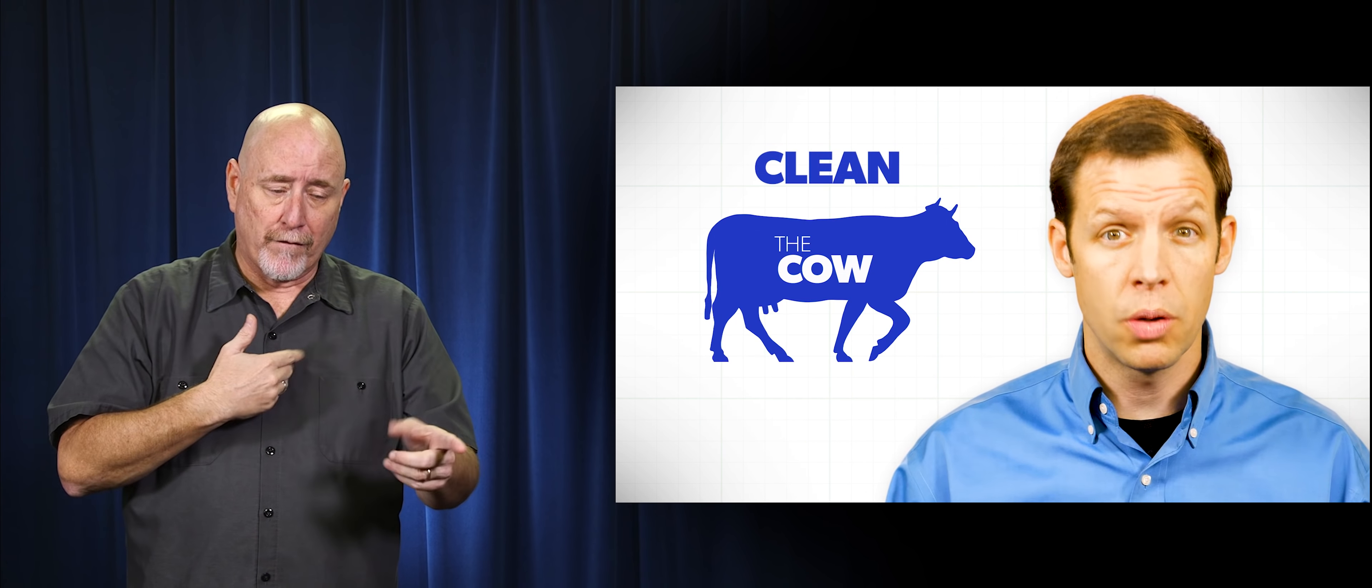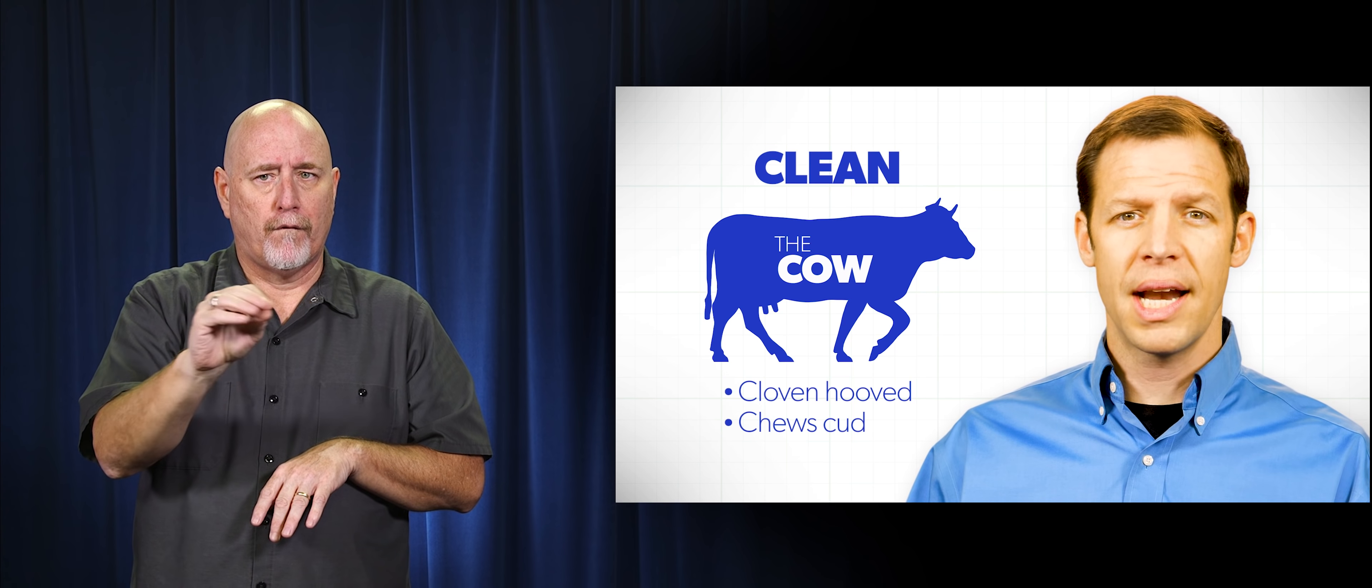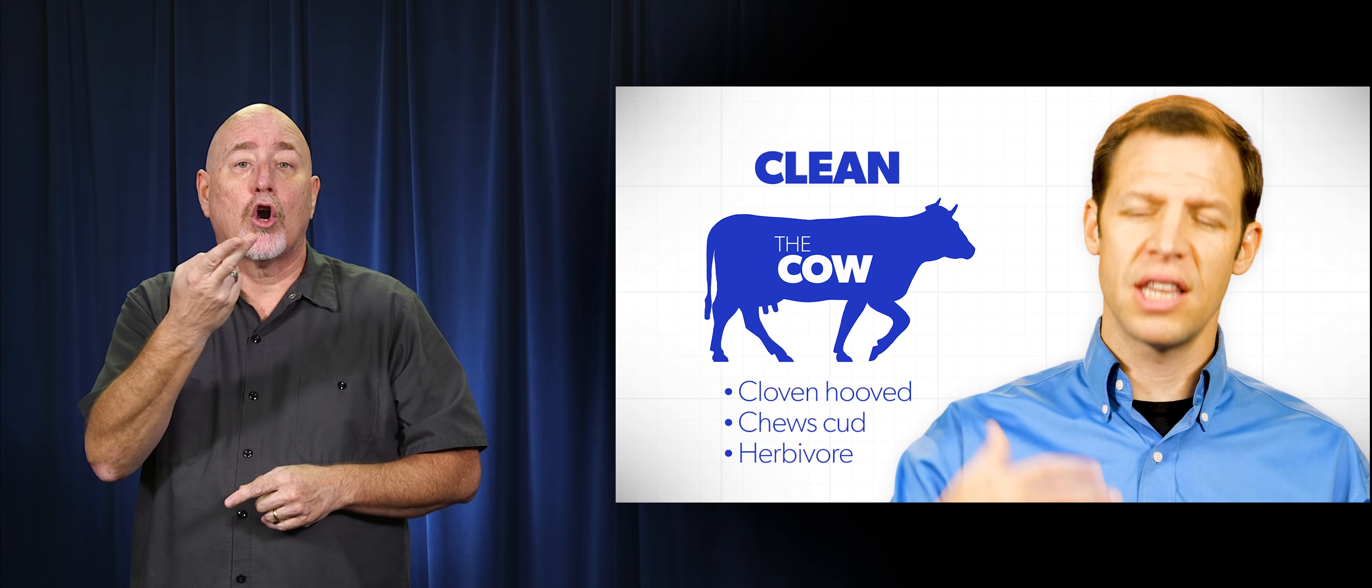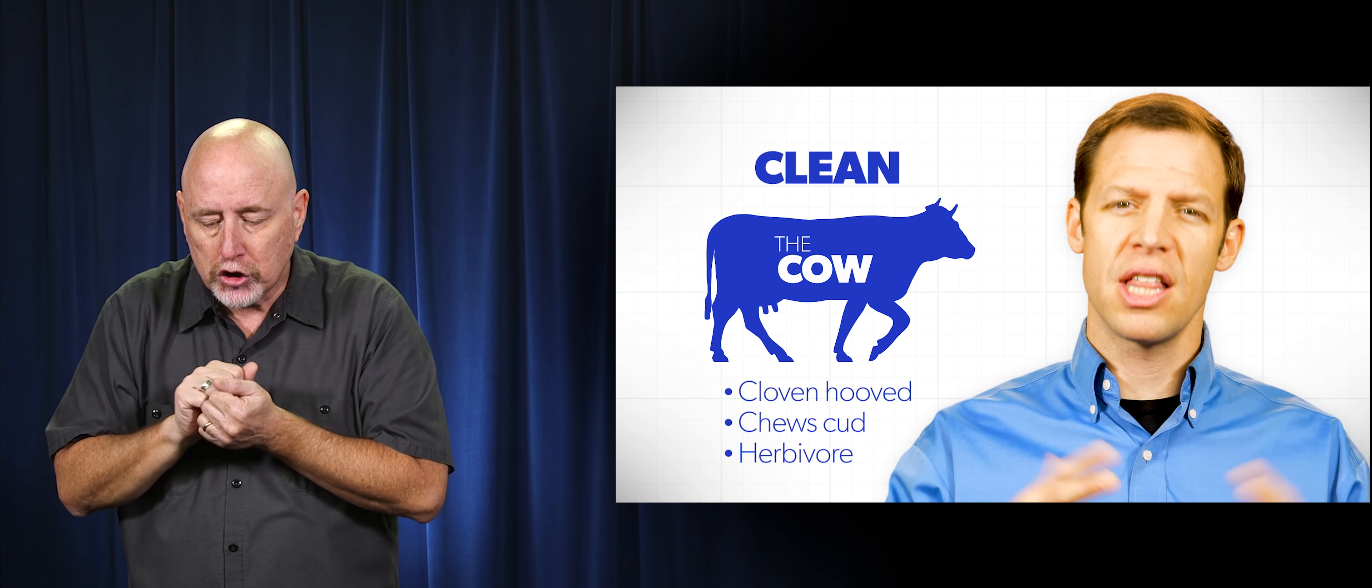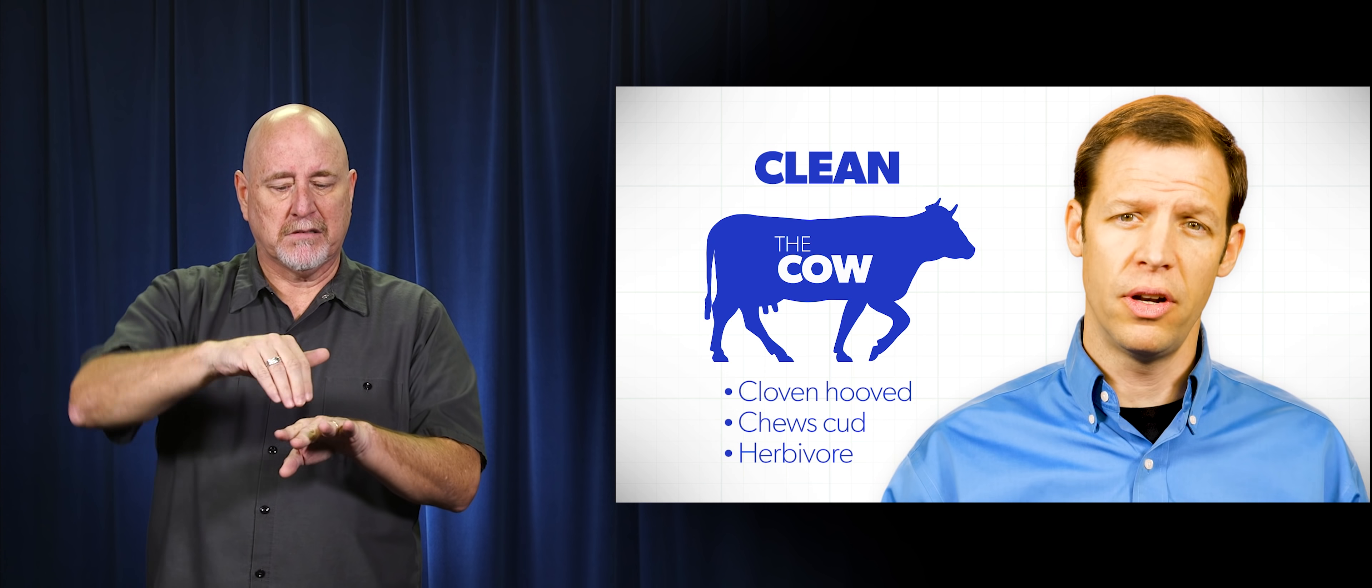So there we go. We have an example of one that has cloven hooves but doesn't chew its cud. Now what would an animal be that has cloven hooves and does chew its cud? A cow would be an example of an animal that has cloven hooves and chews its cud. And a cow is an herbivore. It takes in plants and turns those plants basically into food that then humans consume.